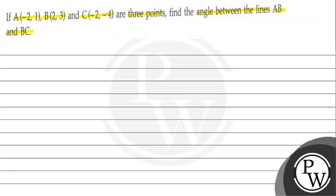In this question, A, B and C are 3 points given, so we have to find the angle between the lines AB and BC. It is a very simple question.